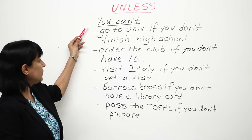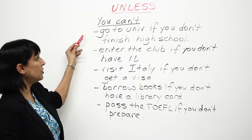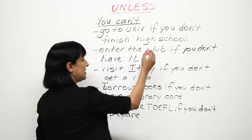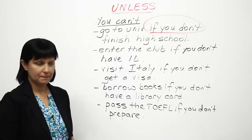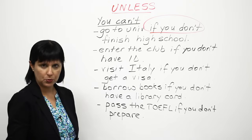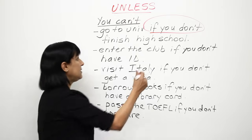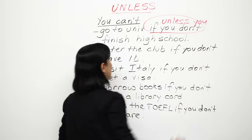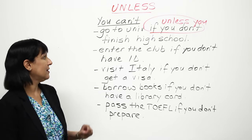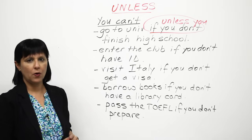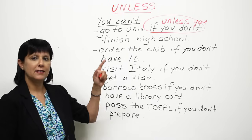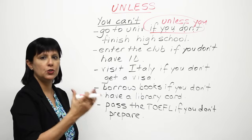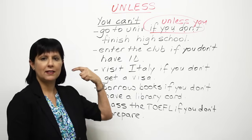For example, let's take the first sentence: 'You can't go to university if you don't finish high school.' The negative condition here is 'if you don't finish high school.' So instead of saying 'if you don't,' you could say, 'You can't go to university unless you finish high school.' You see that we had to use the negative words 'if you don't,' but when we use the word 'unless,' it does that automatically.